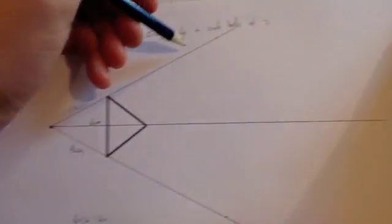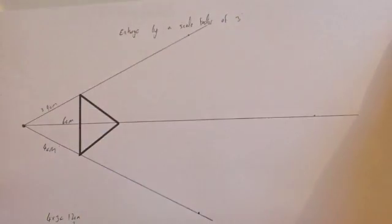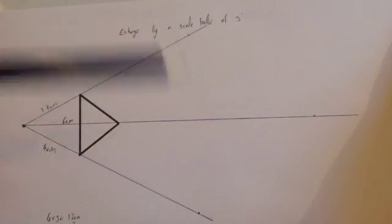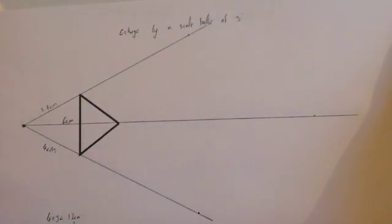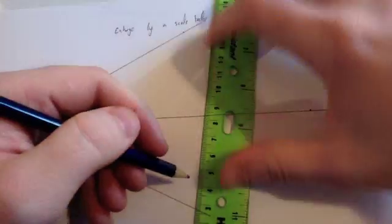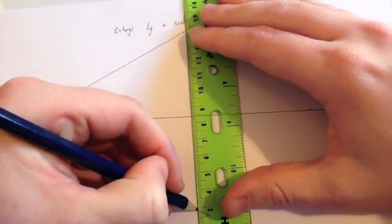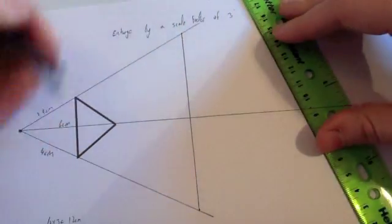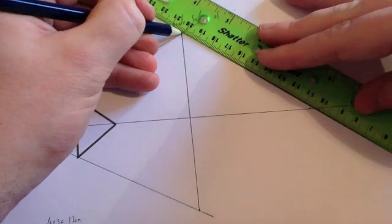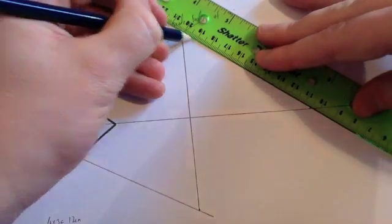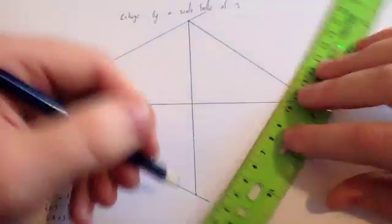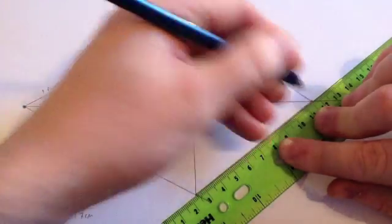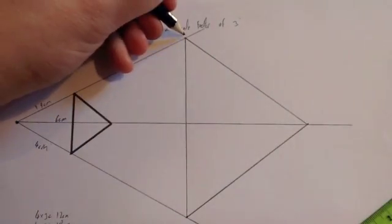Finally then, we just join up our three points. We've enlarged the object by a scale factor of 3, and we've got our image. The image is the new enlarged shape, and it's also 3 times farther from the center of enlargement. Get your ruler and just join these up. So that's the left-hand side of this triangle. There to there. And there to there.